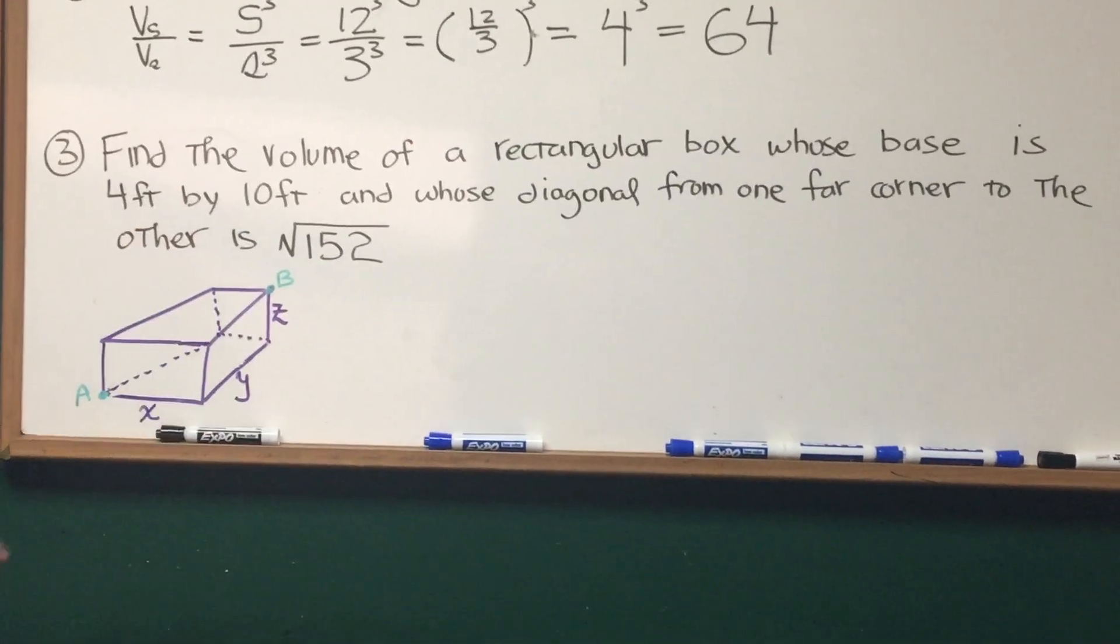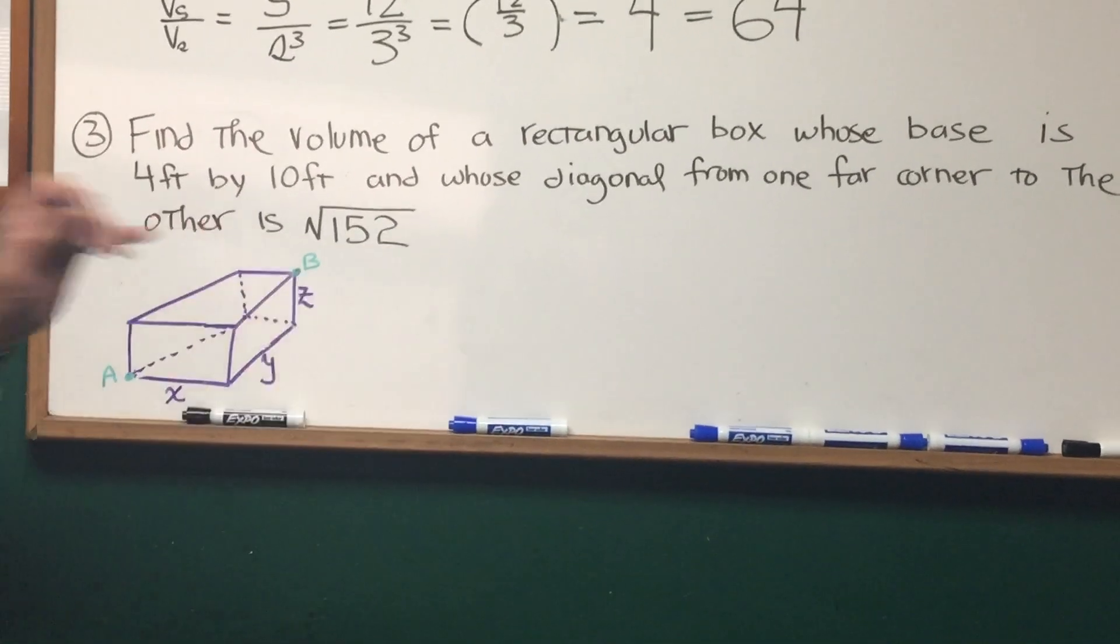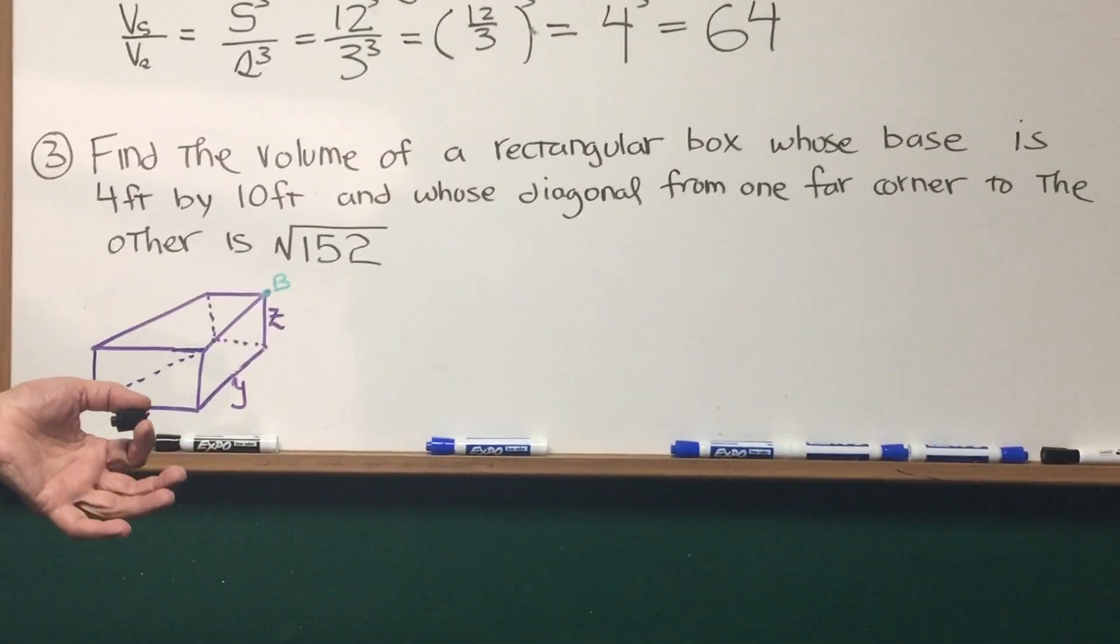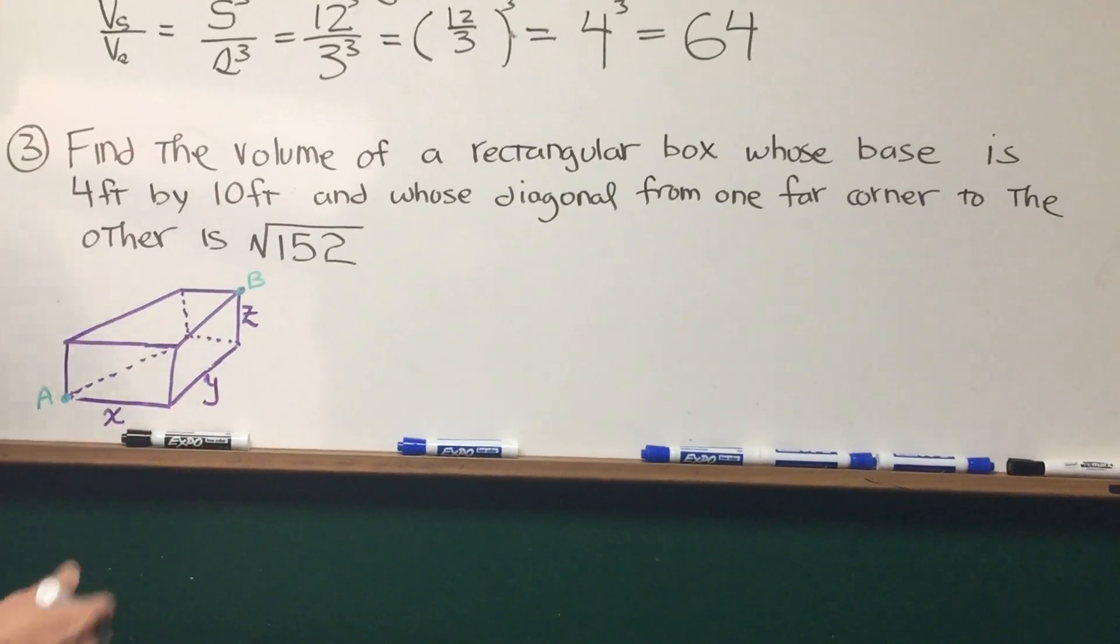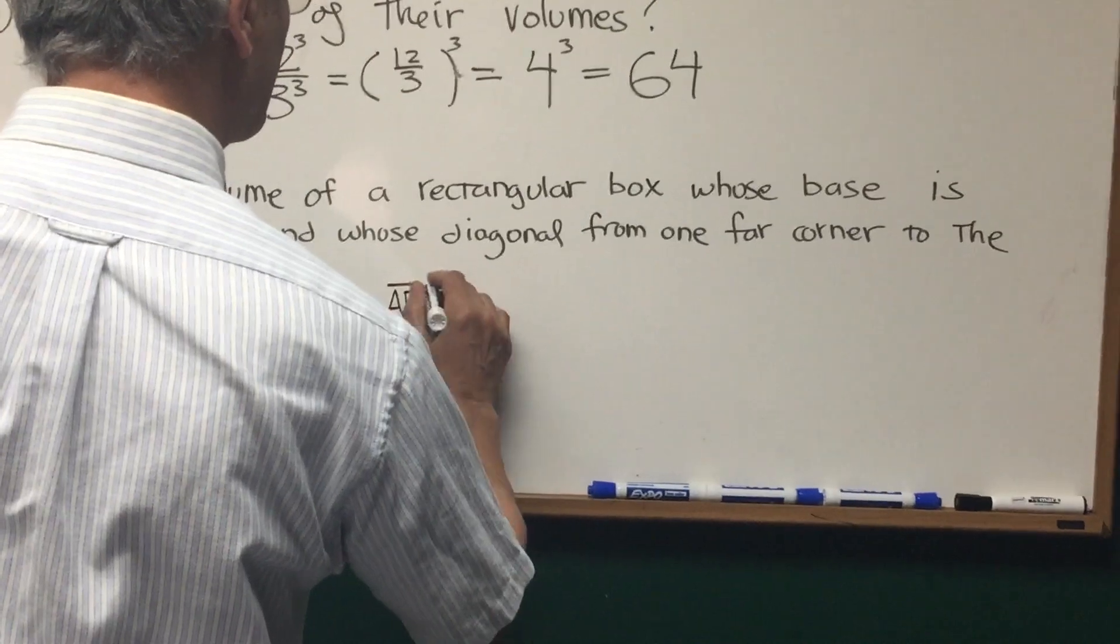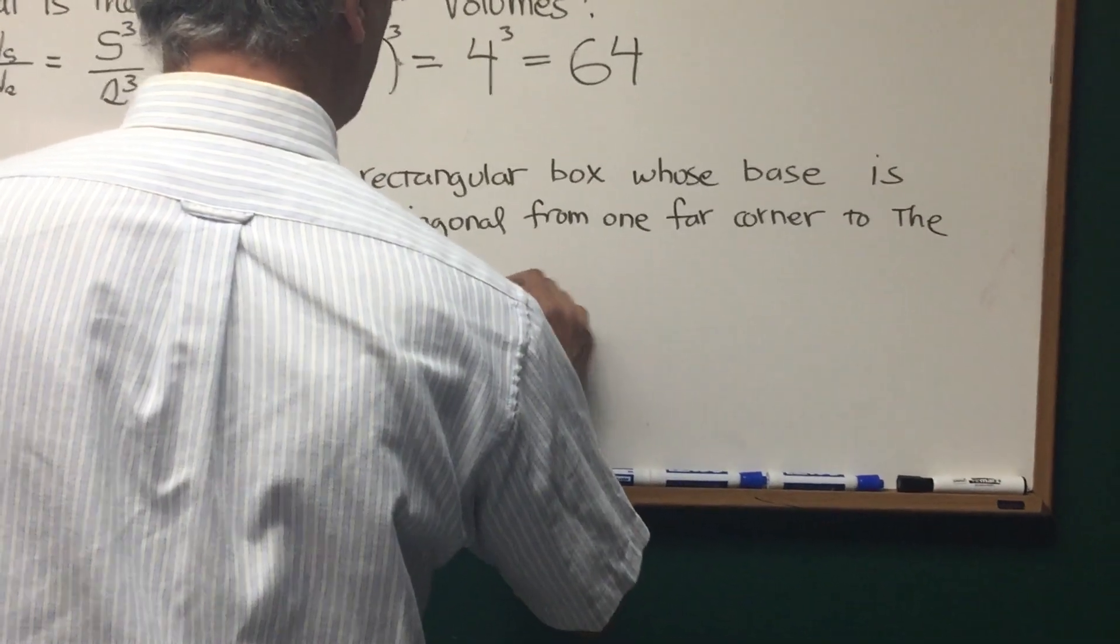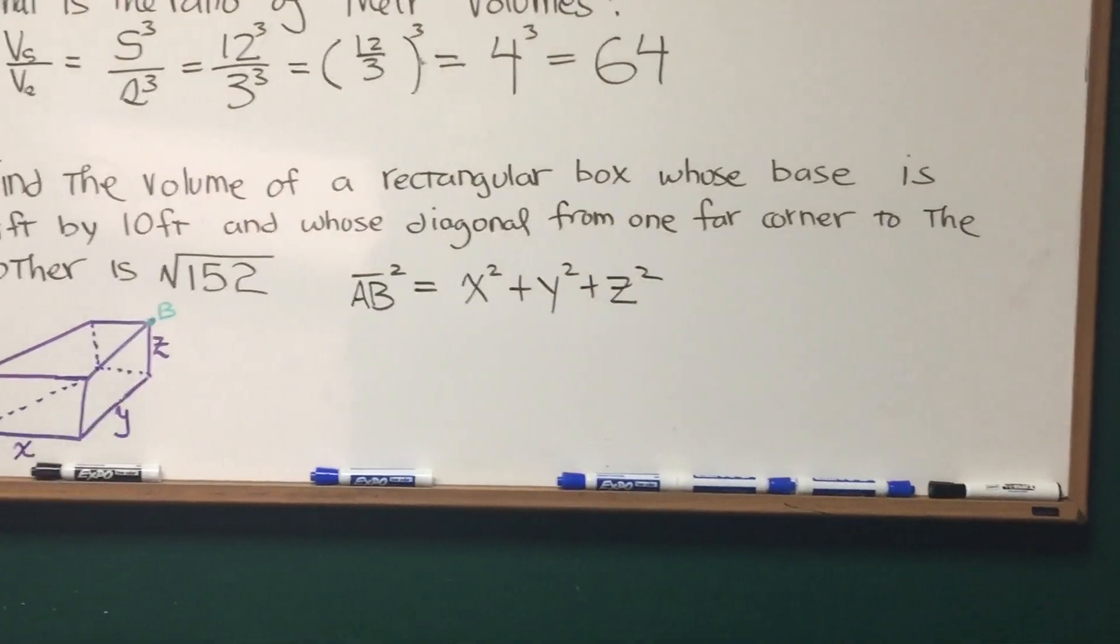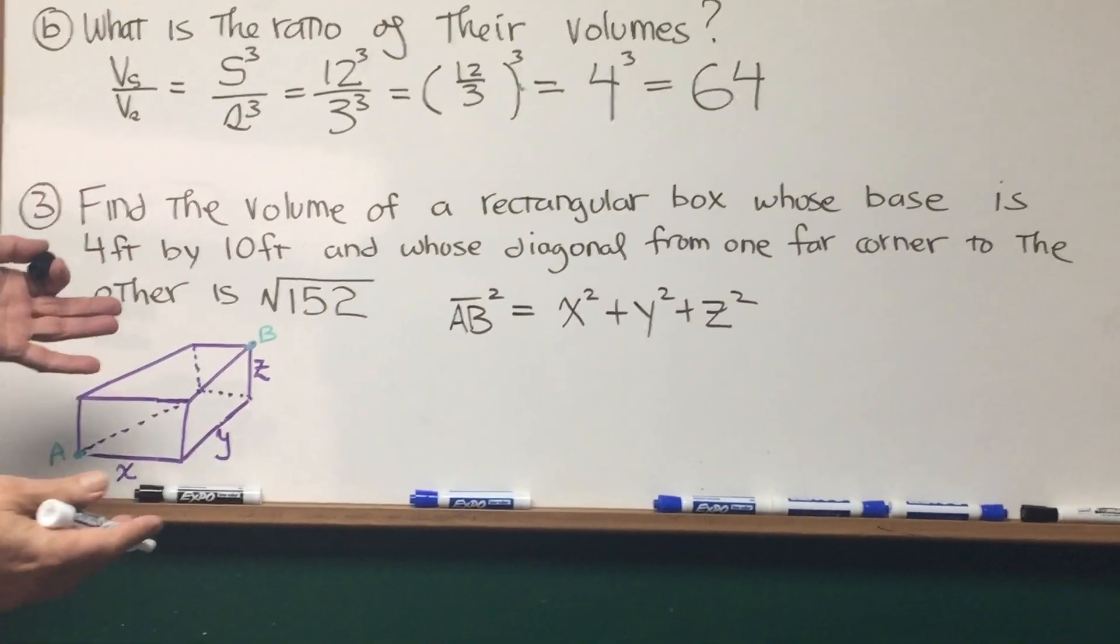Here's a little sketch of this rectangular box, and the distance between A and B, the two far corners, we're going to use an extension of the Pythagorean theorem. We're used to using the Pythagorean theorem in two dimensions. Here it is in three dimensions. What's the distance AB? AB squared is equal to x squared plus y squared plus z squared, where x, y, and z are the length, width, and height of the rectangular box.